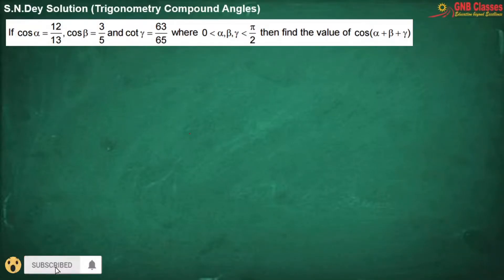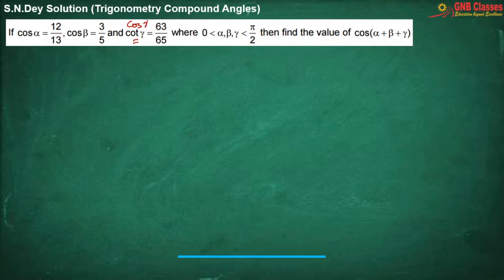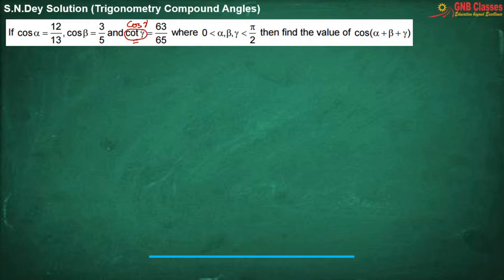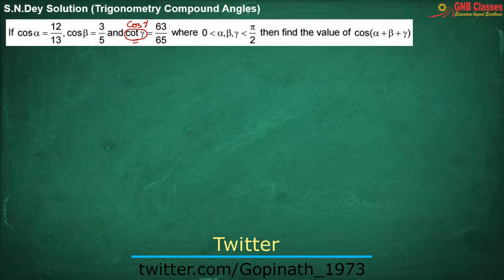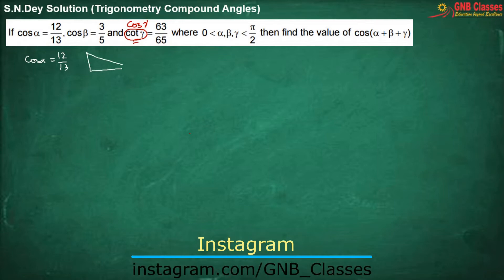This is the question from the book, but there is a printing mistake — it will not be cot gamma, it will be cos gamma. This is the printing mistake in the SN book, so please correct it. We have been given that cos alpha is 12 by 13. Drawing a right angle triangle, if this angle is alpha, then the adjacent side is 12 and hypotenuse is 13, so the perpendicular will be 5. Therefore sin alpha is 5 by 13.